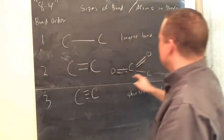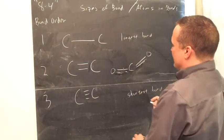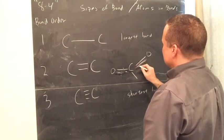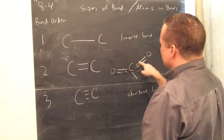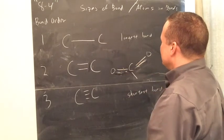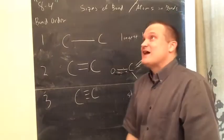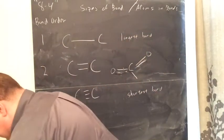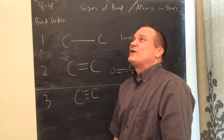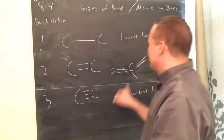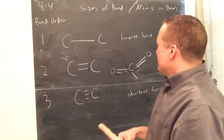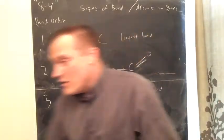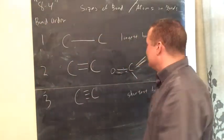So a 1.5 bond order is what you'd get in that case. If you have something like carbonate — a double bond spread around three oxygens — you'd have four bonds divided by three positions, which is 1.333 bond order. A 1.333 bond order would actually be shorter than a 1.5 bond order.